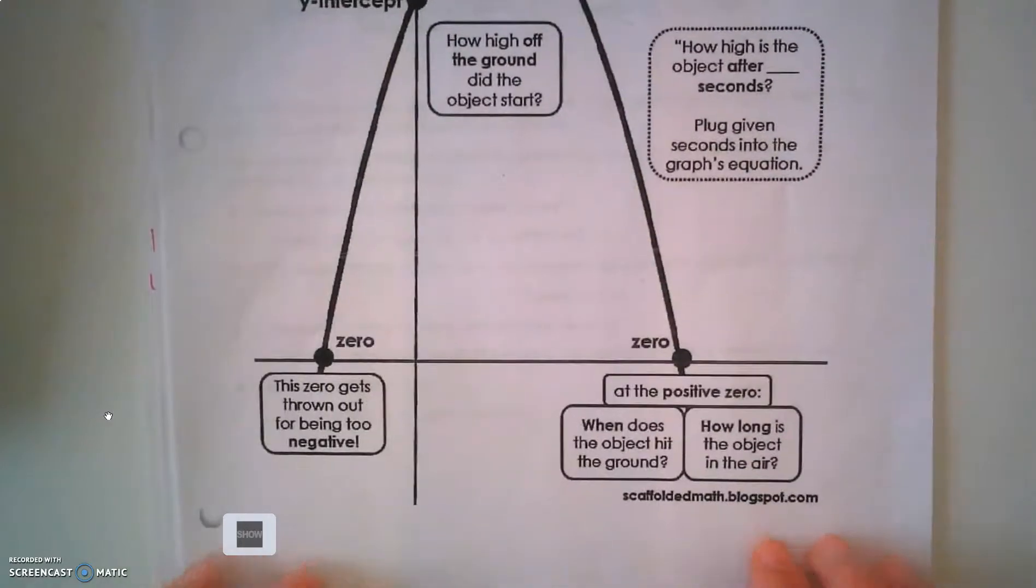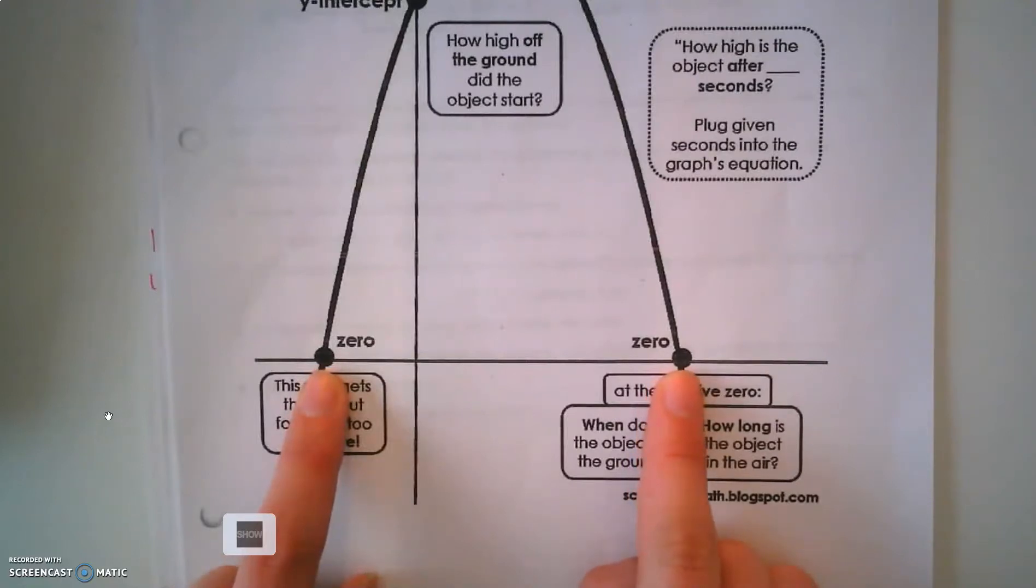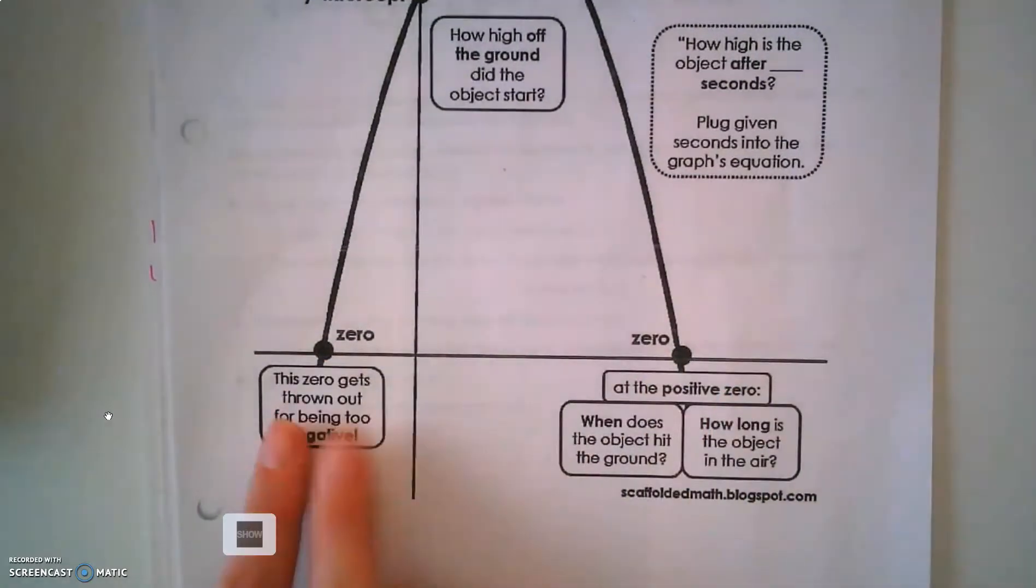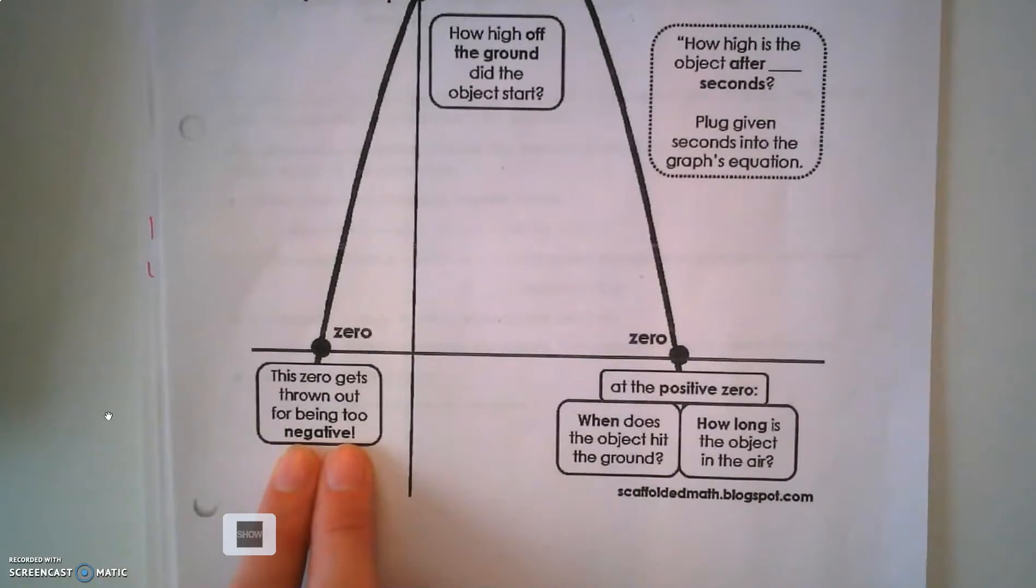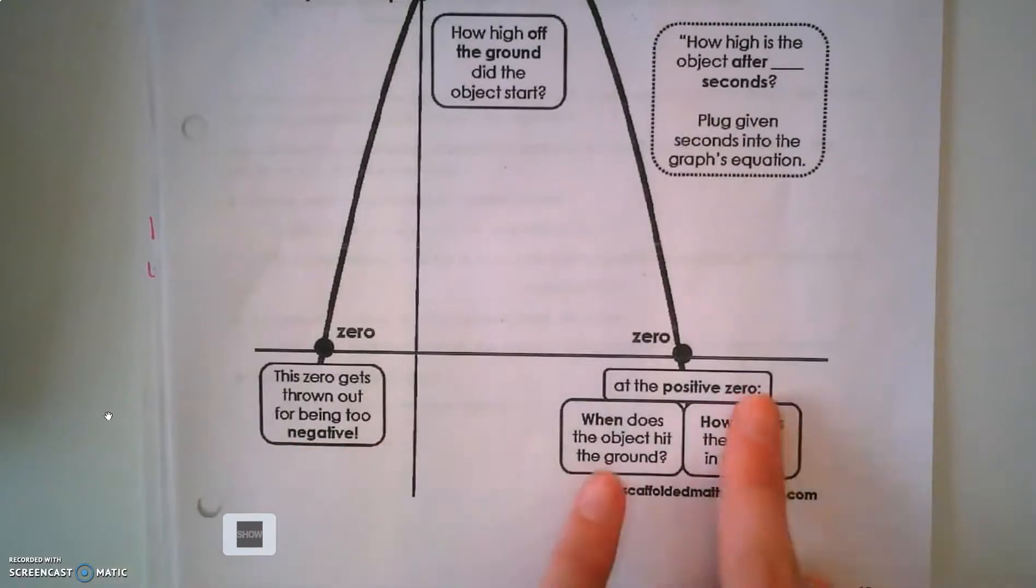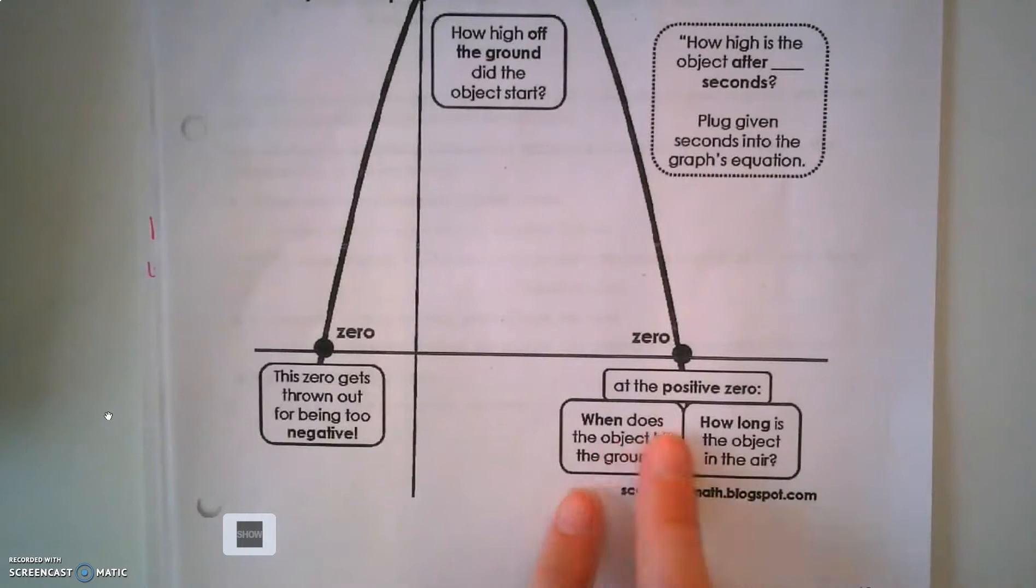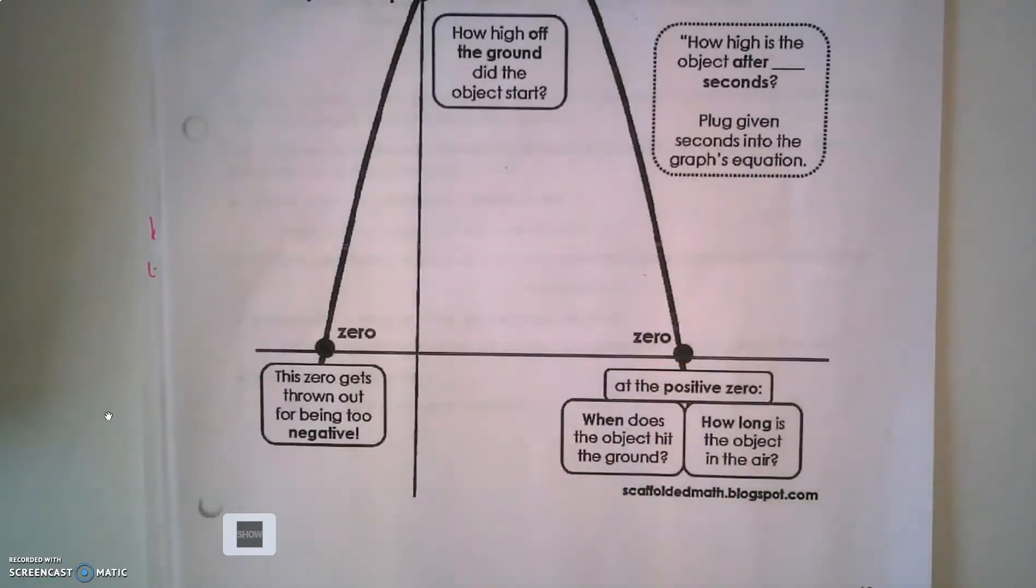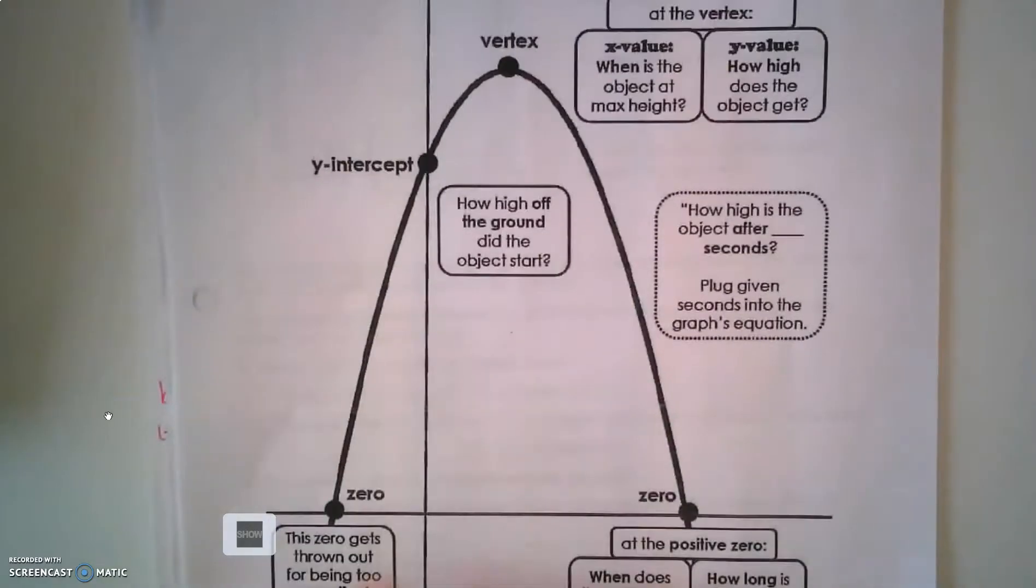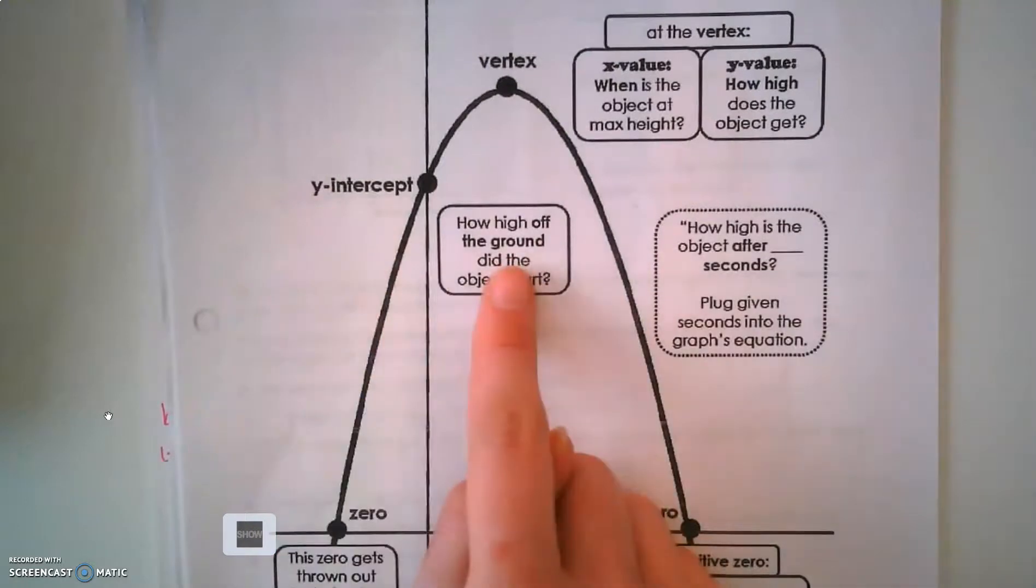Let's look at the bottom of this quadratic. Remember, zeros have another name - they're x-intercepts. Typically you'll have a negative x-intercept and a positive one depending on the word problem. This zero gets thrown out because it's too negative. We're going to be talking about distance and time, and distance and times cannot be negative. The positive zero - I can ask you two different questions: when does the object hit the ground and how long is the object in the air? Both of those are asking the same question: what is the x-intercept.